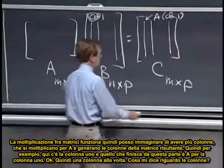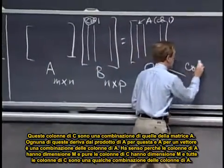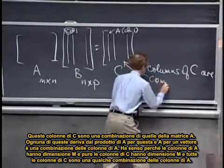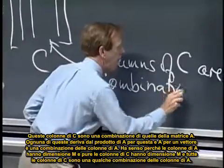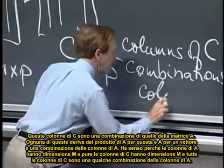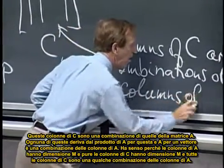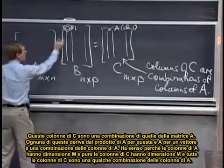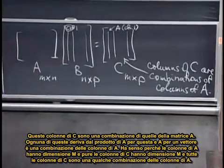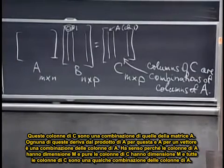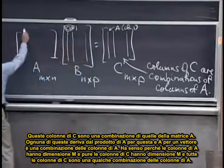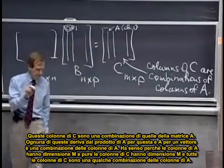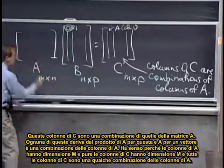So that's the picture a column at a time. So what does that tell me? What does that tell me about these columns? These columns of C are combinations, because we've seen that before, of columns of A. Every one of these comes from A times this. And A times a vector is a combination of the columns of A. And it makes sense, because the columns of A have length M, and the columns of C have length M. And every column of C is some combination of the columns of A.